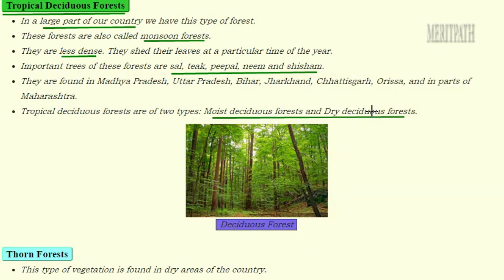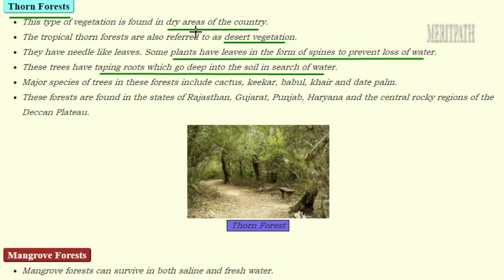Tropical deciduous forests are classified into two types: the first type is moist deciduous forest, and the second type is dry deciduous forest.